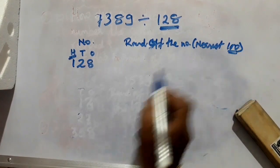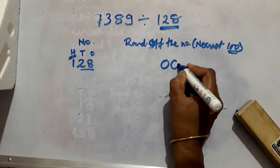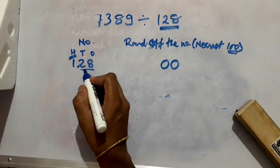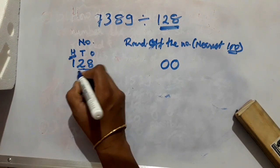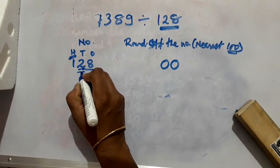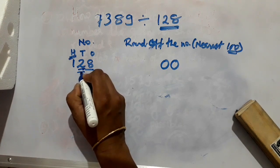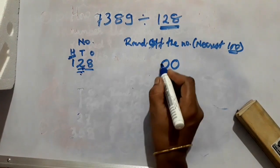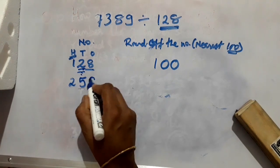In 100 there are two zeros, so underline 2 digits and write two zeros. Now among the underlined digits, check the one at the higher place — here it is 2. Is it greater than or equal to 5? No, so the previous number 1 stays 1. So 128 rounded to the nearest 100 becomes 100.